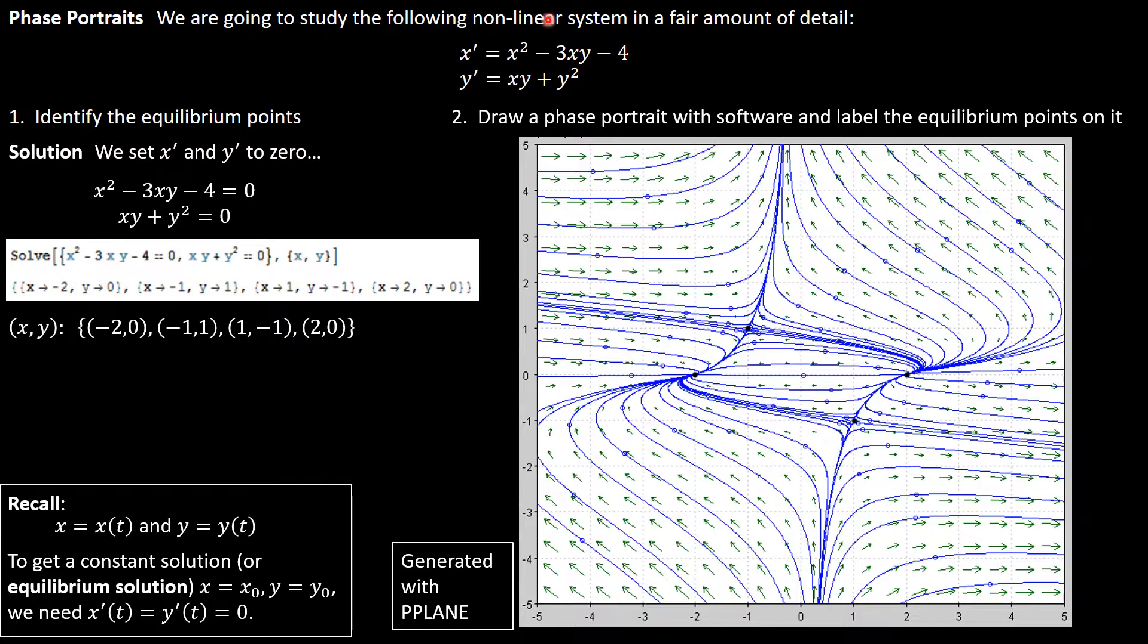Really nifty piece of software. All you do is you type in the different differential equations you want to analyze and then you click on the resulting vector field to specify initial conditions. So I clicked here, I clicked here, I clicked here, and it would just draw a solution curve going through that point. When I clicked in enough places I got this picture, and this picture basically tells us how solutions behave in response to any given initial conditions. Notice that I've also identified our equilibrium points as little black points: negative two zero, negative one one, one negative one, and two zero.